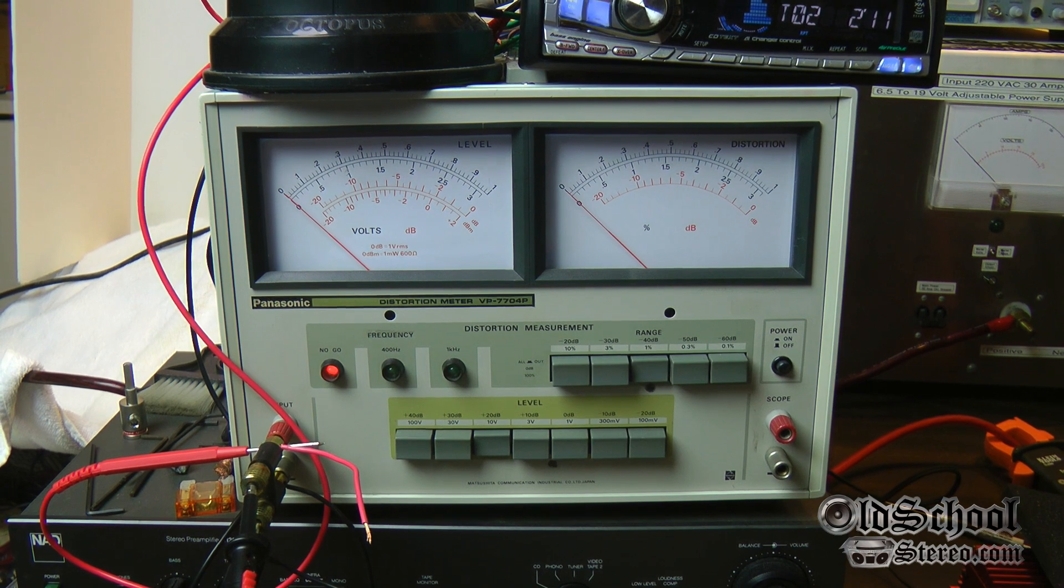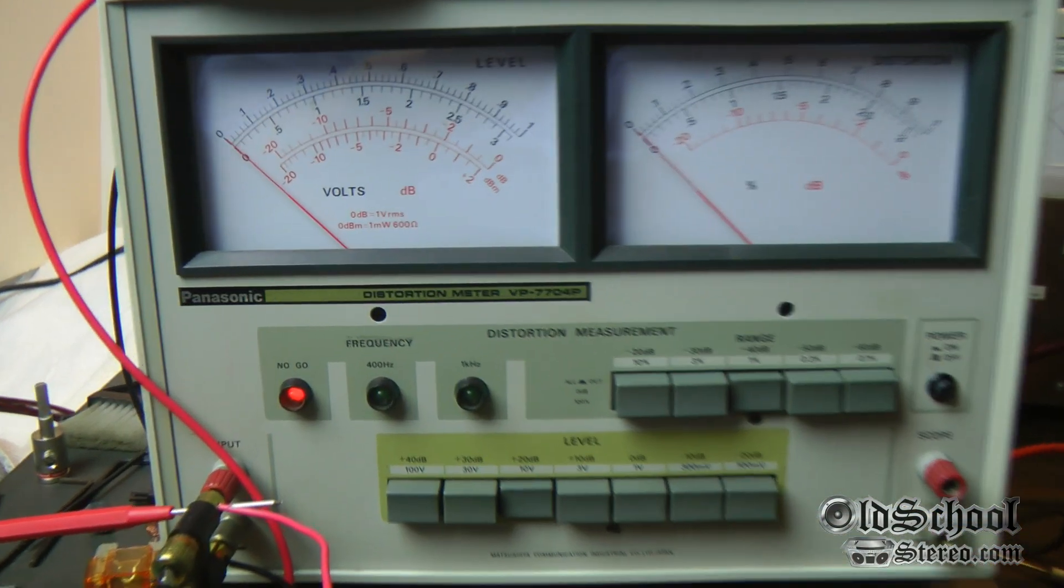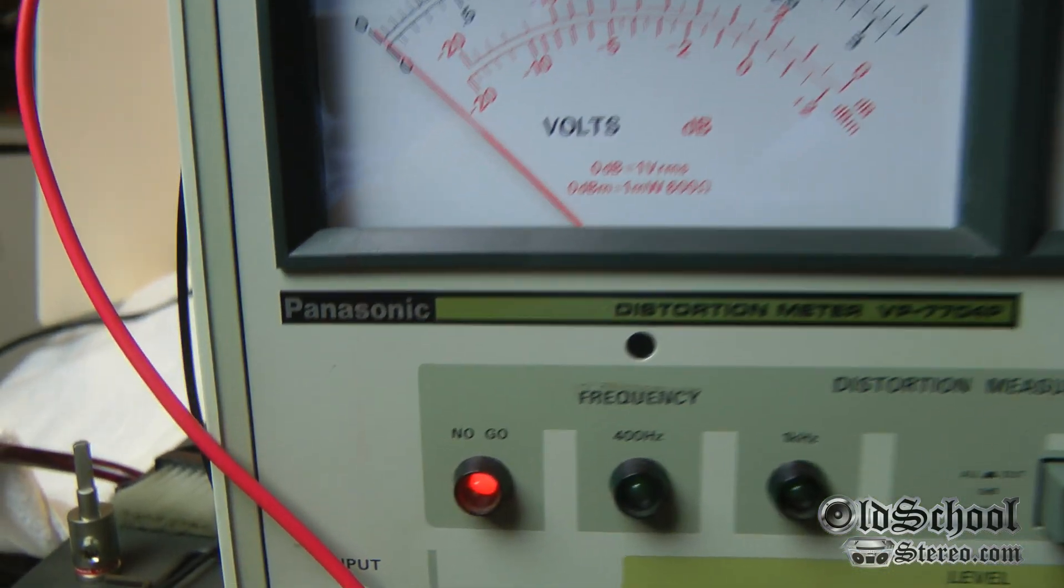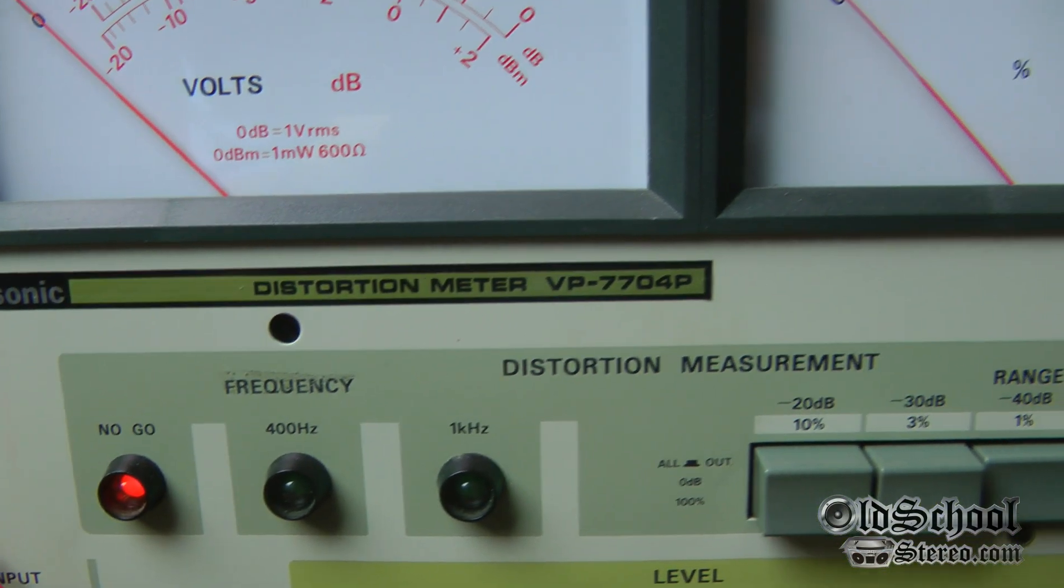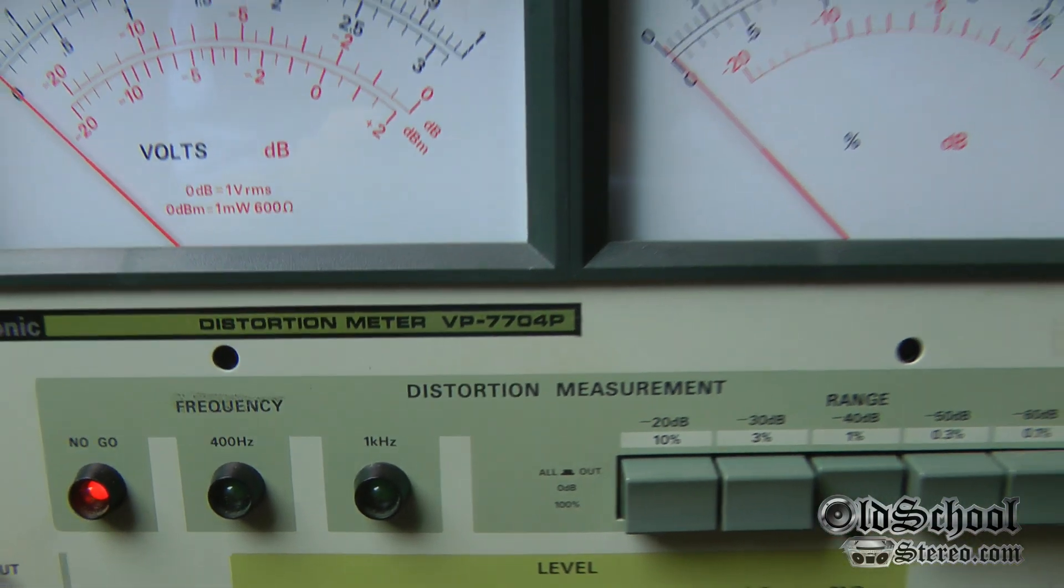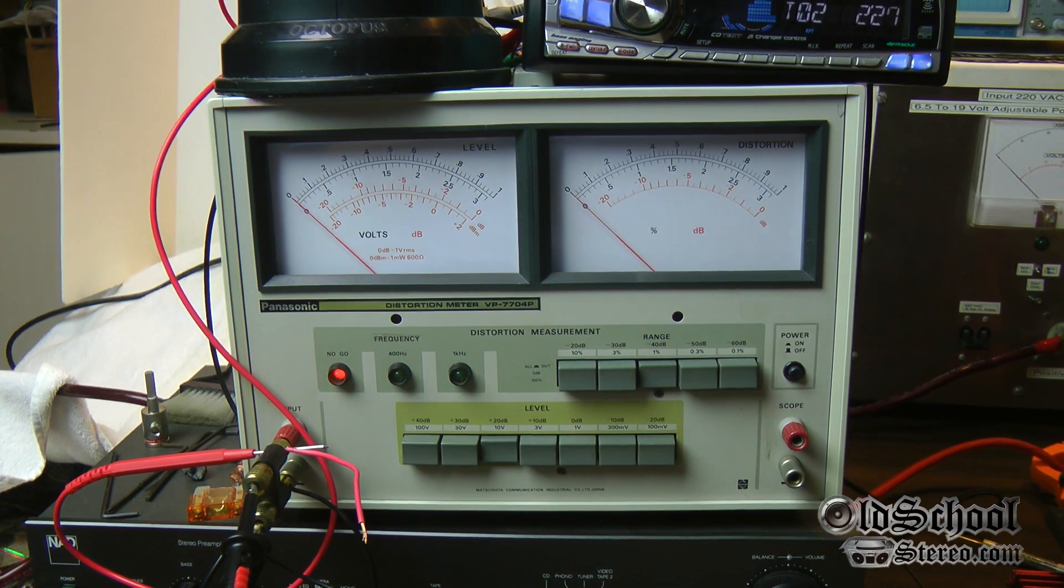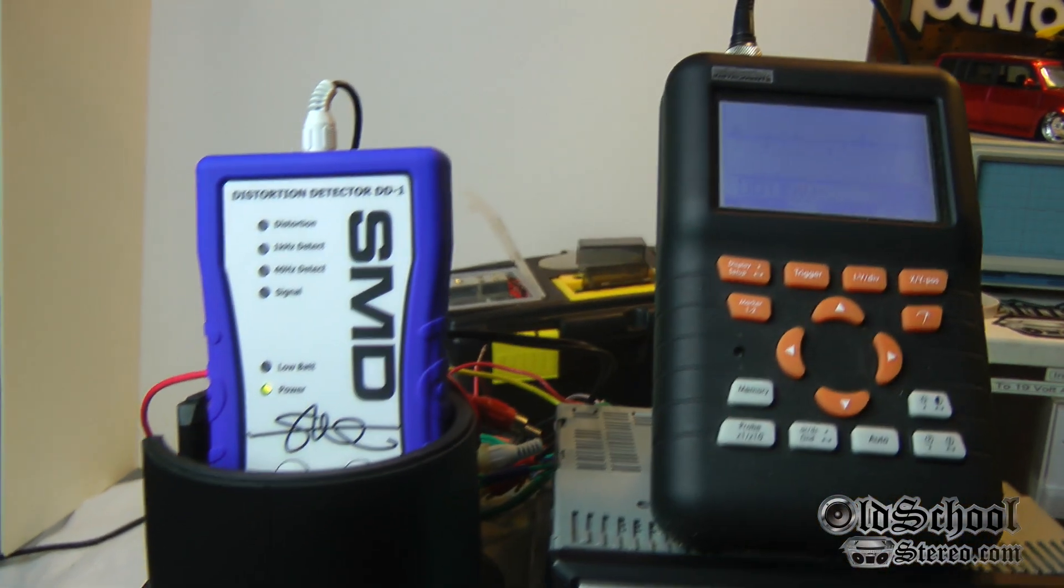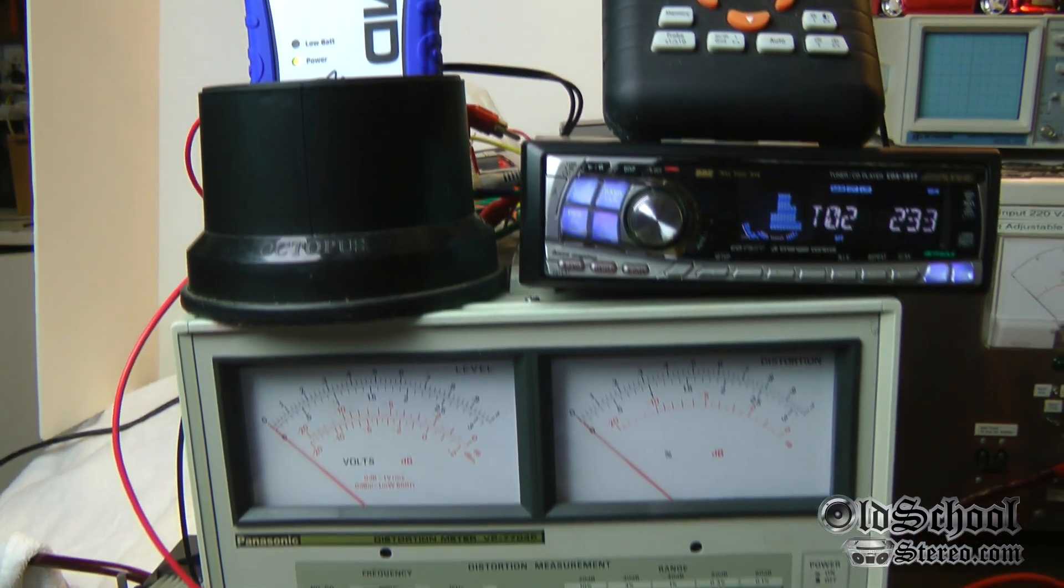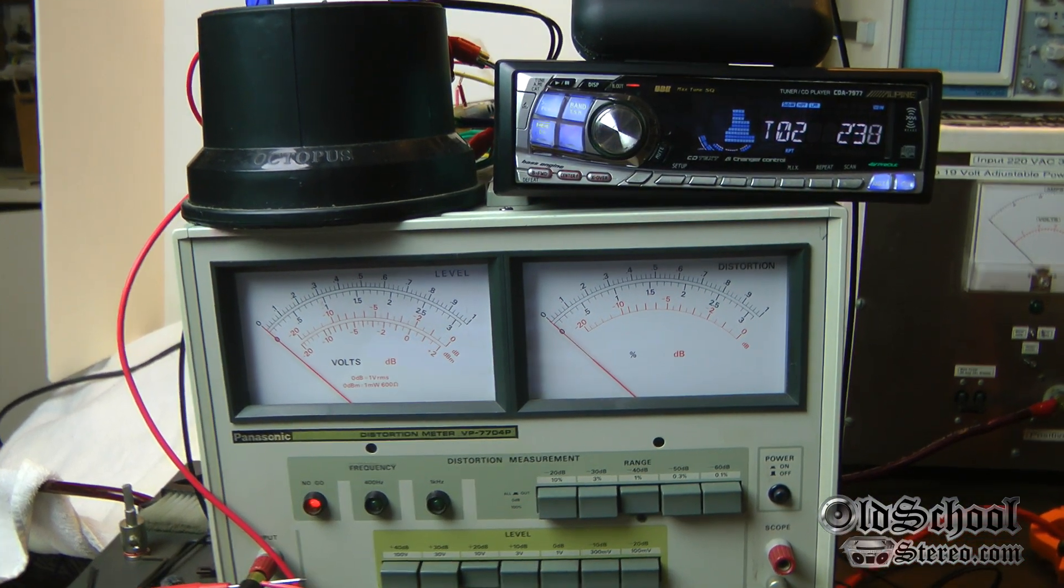What's up guys, Big D Whiz, Old School Stereo dot com. We have a new device here for the test bench, a Panasonic distortion meter VP7704P. I'm going to show you how useful this device is in conjunction with our oscilloscope and DD1. I'll show you how important it is to check your outputs on your head unit and make sure it doesn't have any distortion.